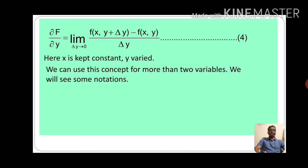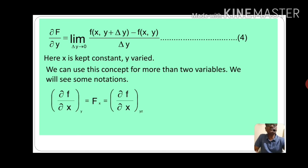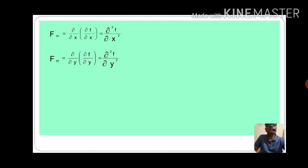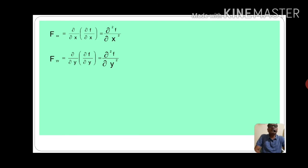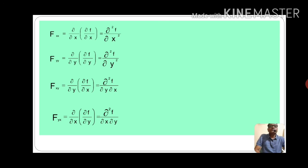We can use this concept for more than two variables. Here we will see some notations. Del f by del x keeping y constant is also denoted by f of x. The second-order notation f of xx is del by del x of del f by del x, which means del 2 f by del x square. F of yy is given by del by del y of del f by del y, which is del 2 f by del y square. F of xy is del by del y of del f by del x, equal to del 2 f by del y del x.